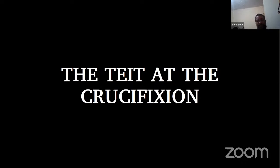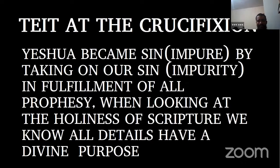Now we're going to look at where the Teit fits in at the crucifixion, because it was there and all of these things were there. As we grow through scriptures we miss certain things because we didn't have that knowledge. Yeshua became sin — he became impure by taking on our sin and impurity in fulfillment of prophecy. When looking at the holiness of scripture, we know all details have a divine purpose — every single detail.